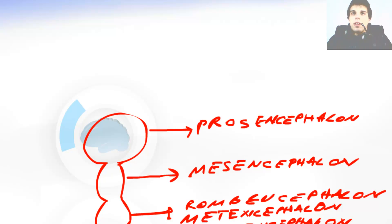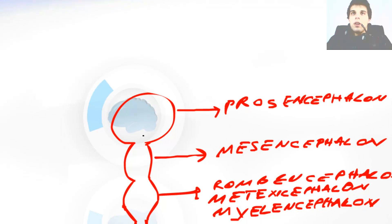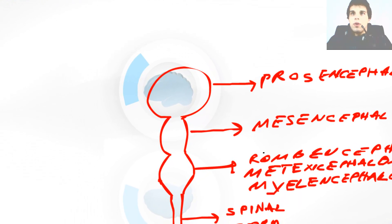So this looks like one after another, three vesicles. First vesicle for the romancephalon, the second vesicle for the mesencephalon, and the third vesicle for the prosencephalon.